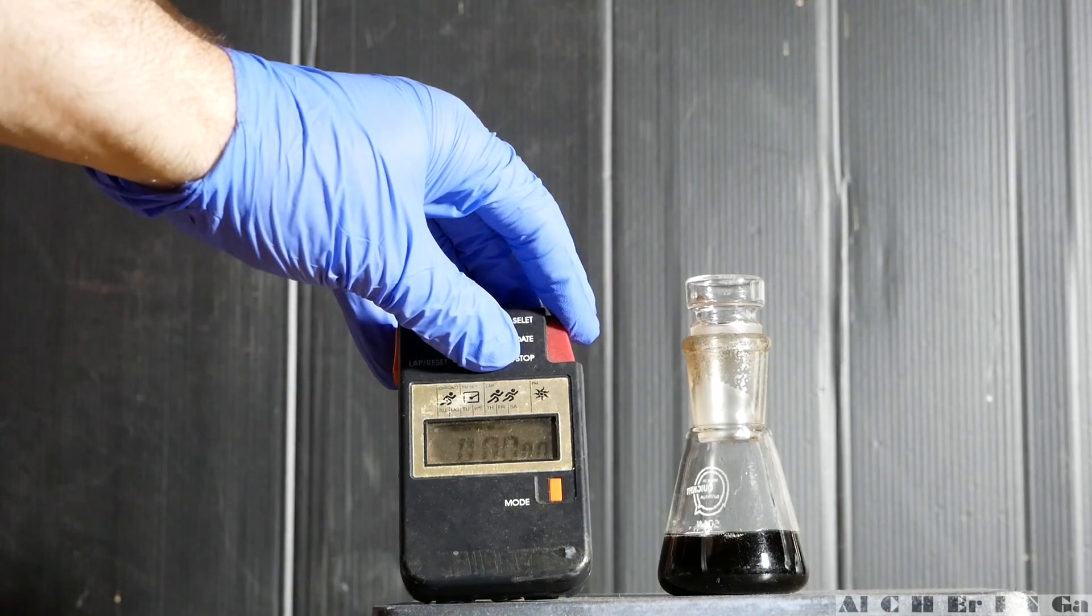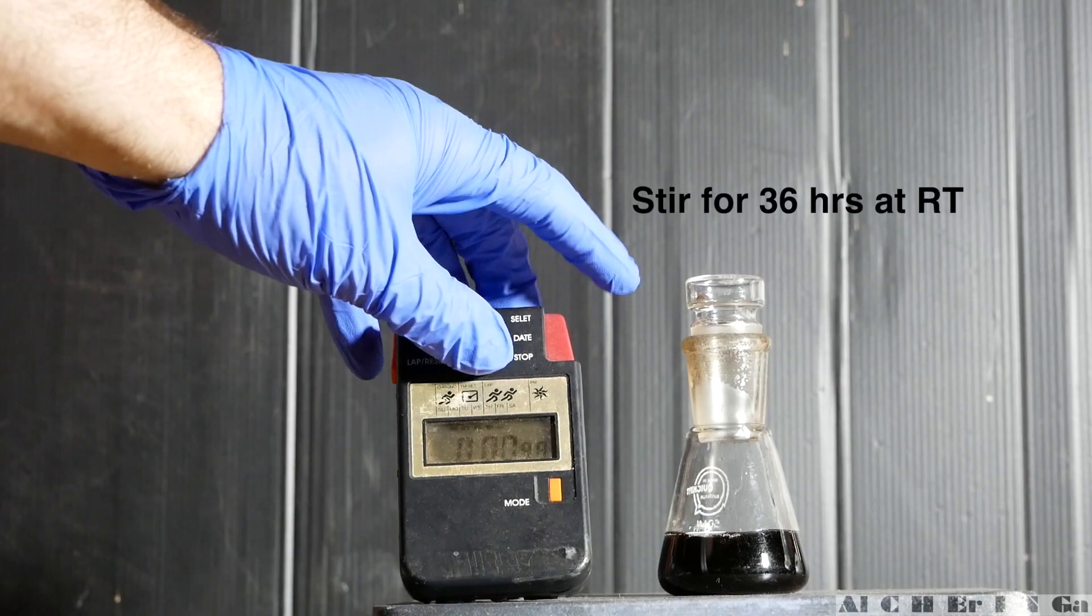Stopper the flask and stir the mixture for 36 hours at room temperature. You may wrap the flask with some aluminum foil or leave it to stir in a dark place.